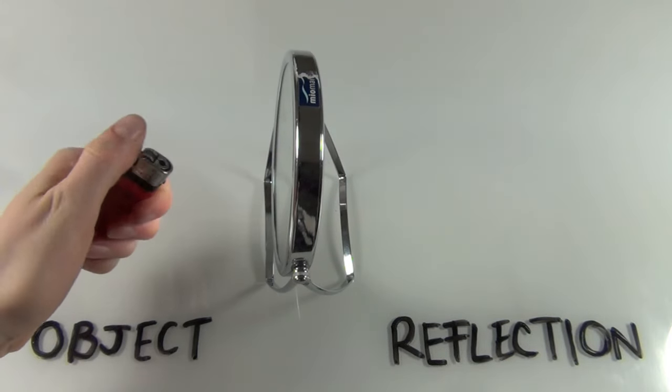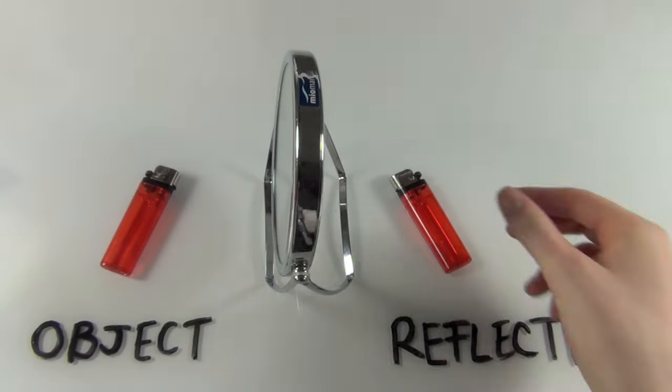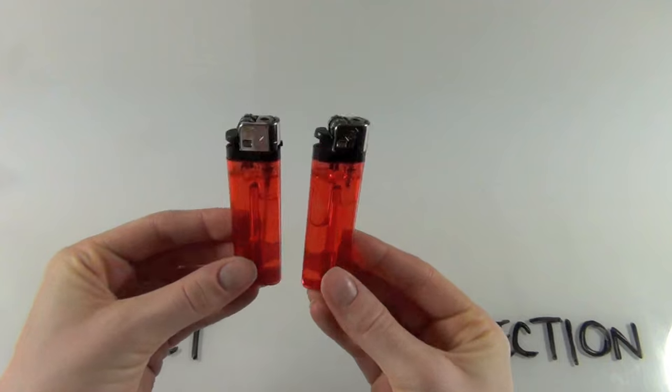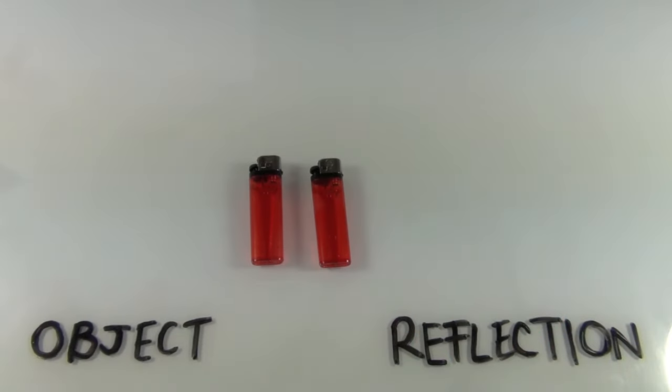And our next object is a lighter, and there's its reflection. And by rotating the reflection, we can very easily see that again, the object is identical to its reflection.